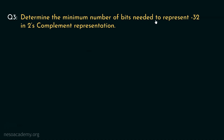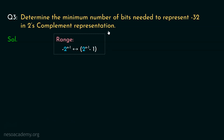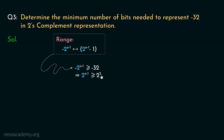Determine the minimum number of bits needed to represent minus 32 in 2's complement representation. Using n bits, the range in 2's complement is from minus 2^(n−1) to 2^(n−1) − 1. To find the minimum bits for minus 32, we set minus 2^(n−1) ≤ minus 32, which means 2^(n−1) ≥ 32. Since 32 = 2^5, we get n − 1 ≥ 5, so n ≥ 6. At least 6 bits are needed to represent minus 32 in 2's complement.